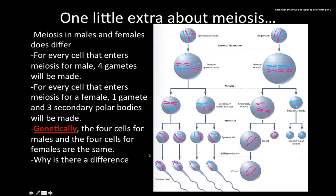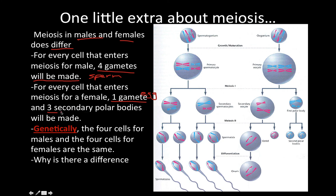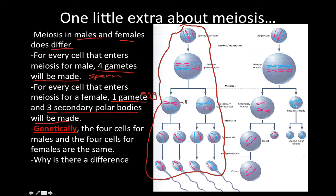There's one more thing to discuss: meiosis in males and females differs slightly. For every cell that enters meiosis in a male — every spermatocyte — four gametes will be made and all four will develop into sperm cells. This is our standard meiosis: one spermatogonium or spermatocyte makes four gametes that all develop into sperm.